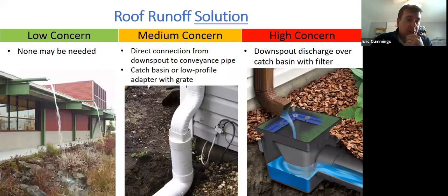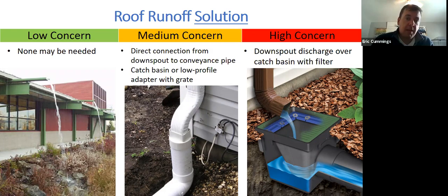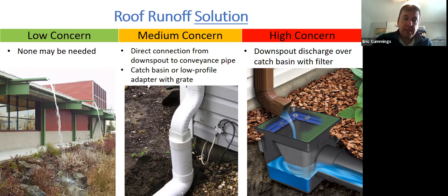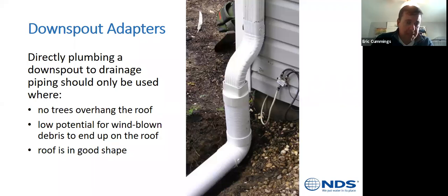For a low concern scenario like a rain garden where gutters flow directly over rocks with no real erosion, a medium concern allows plumbing with a Y or T with a grate and cleanout so you can snake the pipe if it gets clogged. For high concern, you definitely want to be thinking nine or twelve-inch catch basins with a filter and a variety of grate choices.